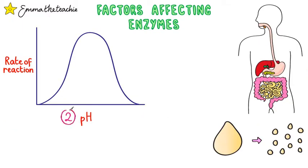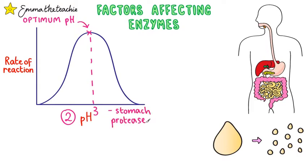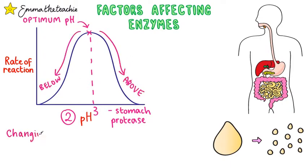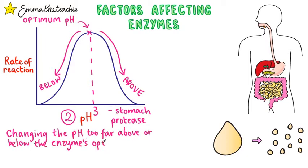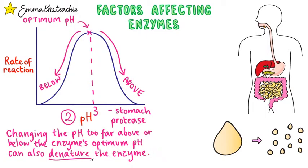Enzymes are also affected by pH — how acidic or alkaline their environment is. Each enzyme will have an optimum pH, and this can vary in the digestive system. For example, the protease produced in the stomach has a low optimal pH. The stomach secretes hydrochloric acid to maintain this acidic environment so the protease can function efficiently. Changing the pH too far above or below an enzyme's optimal pH can also denature the enzyme by changing the shape of its active site, as it affects the charges on amino acids and changes their folding structure.